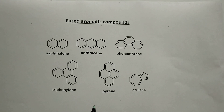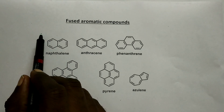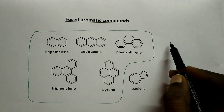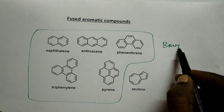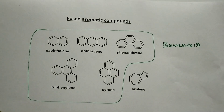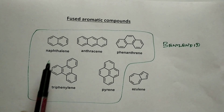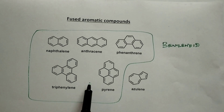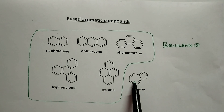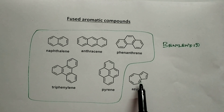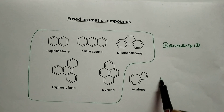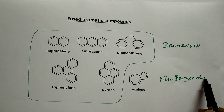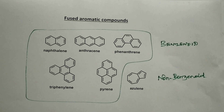These compounds are known as benzenoid aromatic compounds because everywhere six-membered benzene rings are fused together. But this one — there is a seven-membered and a six-membered ring fused together, so there is no pure six-membered ring. This is called a non-benzenoid aromatic system.